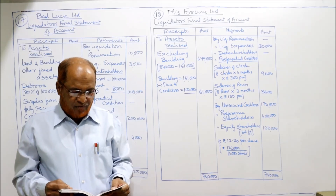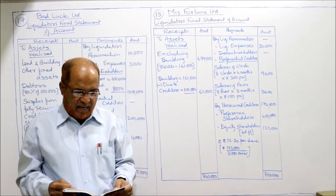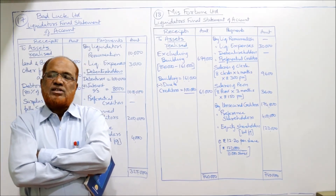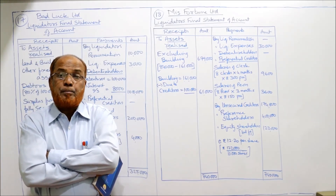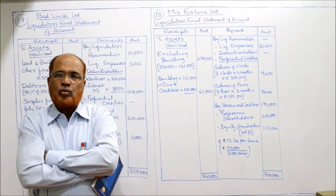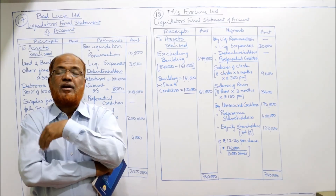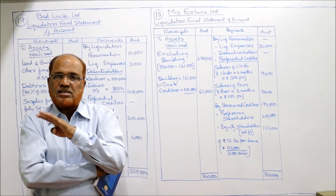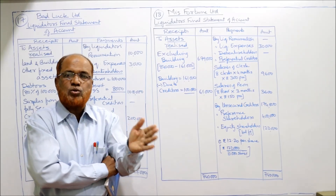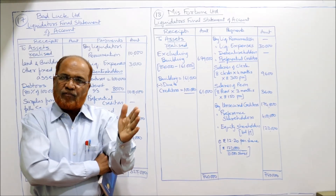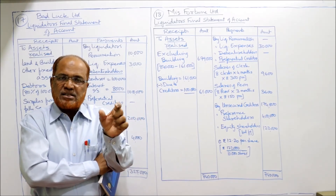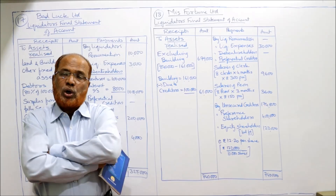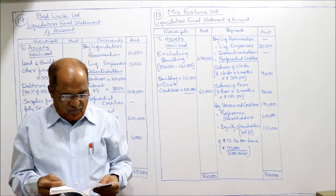Salaries of 8 clerks for 4 months at rupees 300 each per month, and salary of 8 peons for 3 months at rupees 150 each per month are outstanding. Salary and wages outstanding for workers and employees are preferential creditors. Under the Companies Act, salaries due to employees not exceeding 4 months in the immediately preceding 12 months before winding up are preferential. Here salary is due for 4 months, so completely preferential.